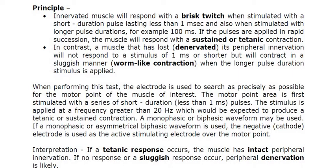When do we get brisk twitch? An innervated muscle will always respond to both short duration and long duration current — whether the pulse is 1 millisecond or 100 milliseconds, the muscle will respond. If the stimulation is at a frequency less than 20 Hz, the current pulses come intermittently, and you will get brisk twitch — the muscle contracts and relaxes with each pulse. So at frequencies of 5, 10, or 12 Hz, we observe brisk twitch contraction.